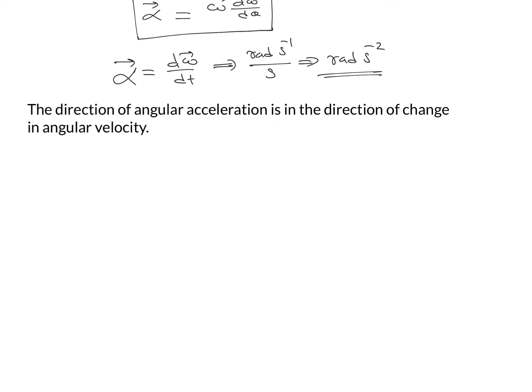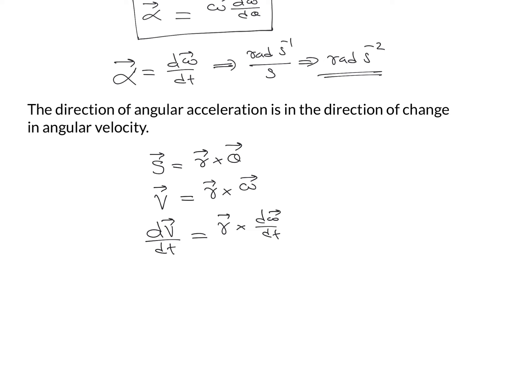Now let us see the relation between linear acceleration and angular acceleration. Displacement equals r vector cross angular displacement, and linear velocity is r vector cross angular velocity. Differentiating this equation, dv divided by dt equals r into d omega divided by dt, where d omega divided by dt gives the value of angular acceleration.